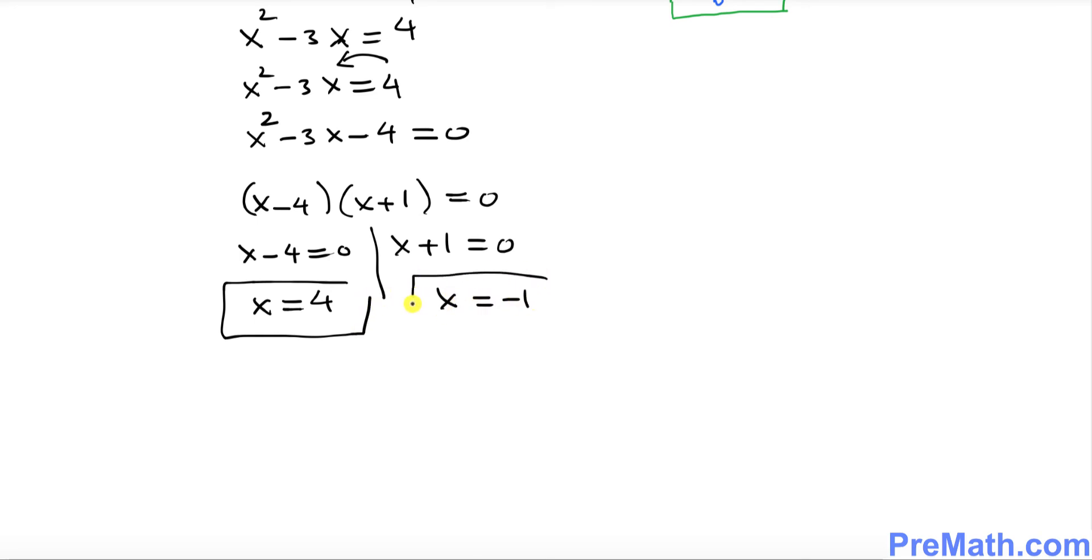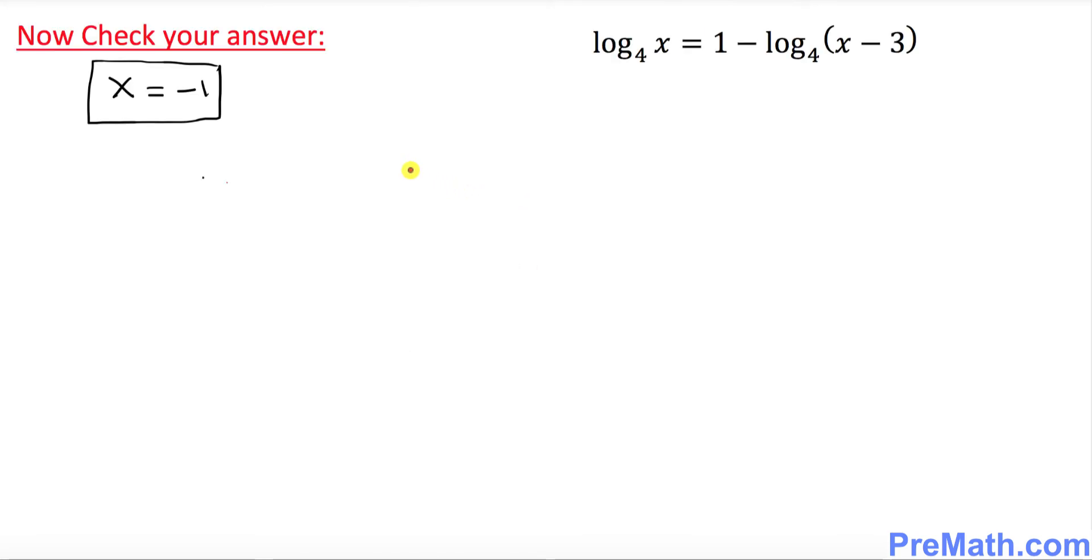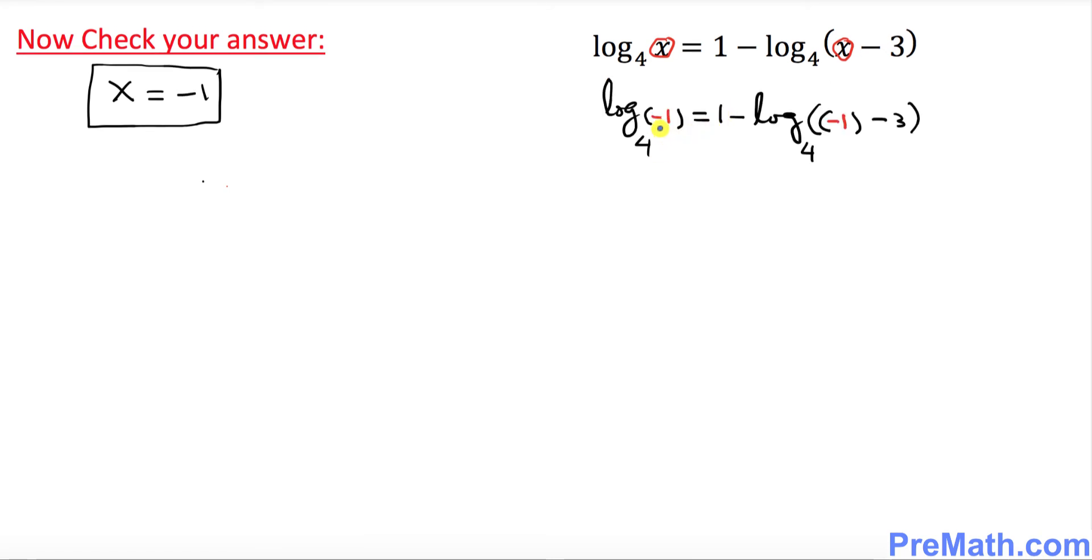Now let's go ahead and check our answer for any extraneous solutions. So first we want to check x equal to negative 1. Wherever you see x, replace it by negative 1. And here I replace x by negative 1 wherever you see x. And here I want you to just look at this thing: log of negative 1 base 4. And as you know that log of negative 1 is undefined. It is not possible, that means this statement is false. So that means that x equals to negative 1 is extraneous.